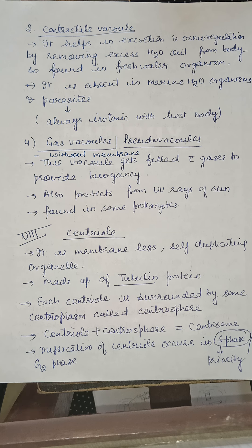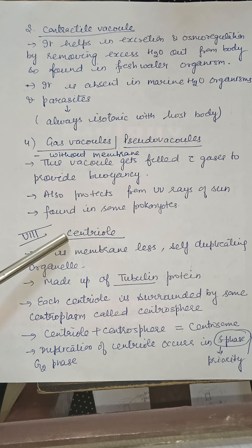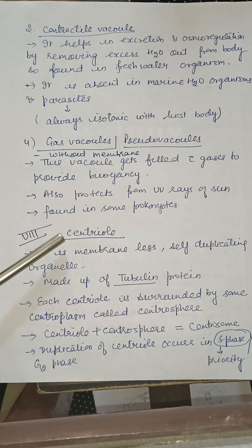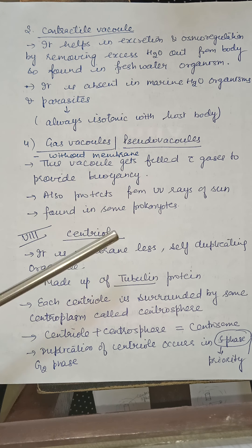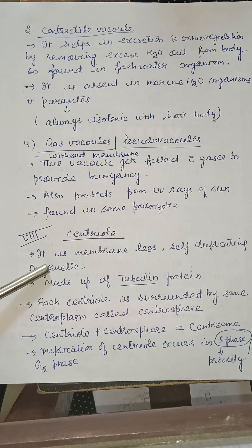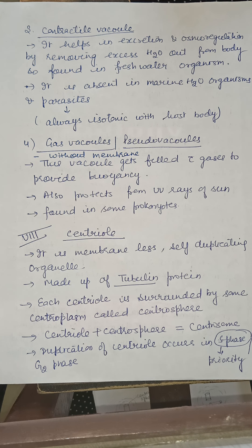The next organelle we are going to discuss is the centriole. Centriole is a membrane-less, self-duplicating organelle. Along with ribosomes, it is one of two membrane-less organelles discussed. It is made up of a protein known as tubulin. It is absent in prokaryotes and present only in eukaryotes.